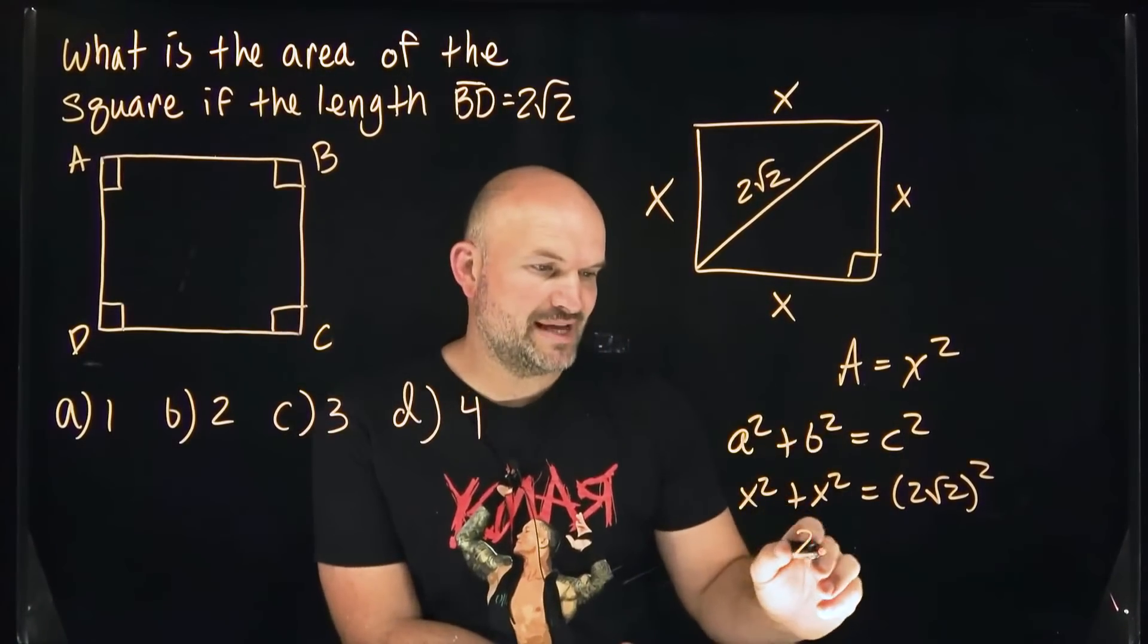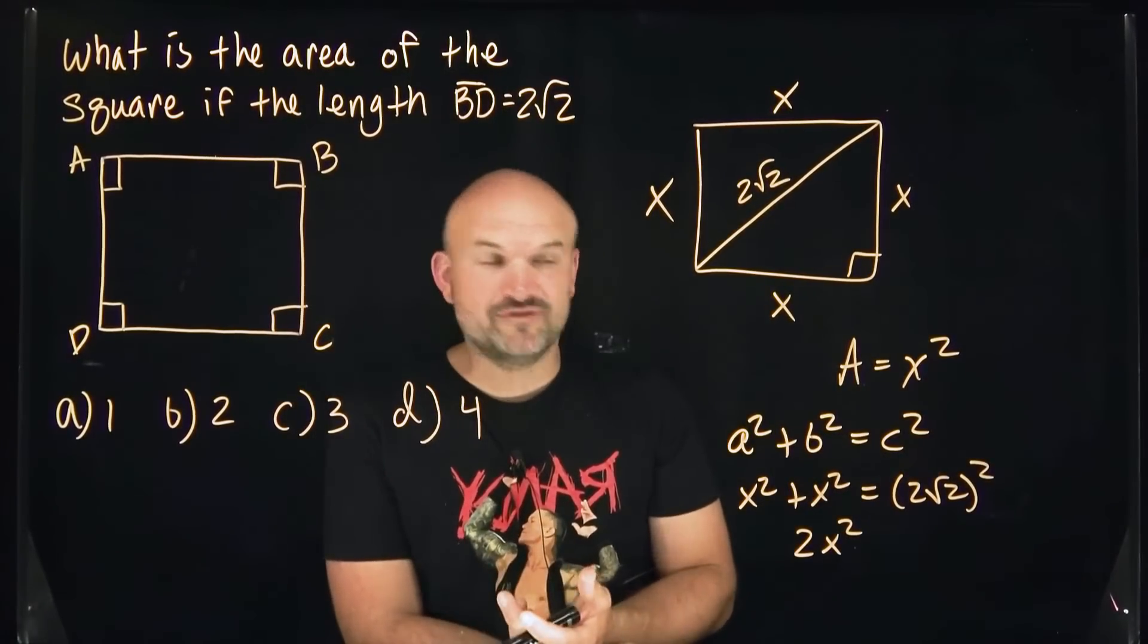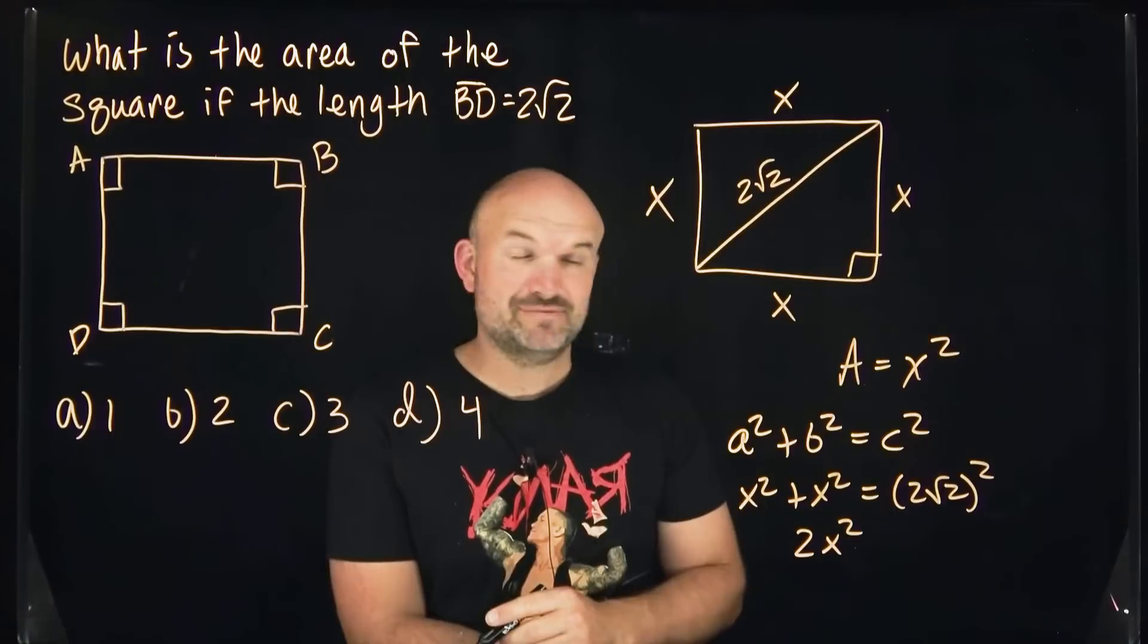x squared plus x squared is going to be 2x squared, and 2 square root of 2 times 2 square root of 2 is going to be 4 times 2, which is going to give me an 8.